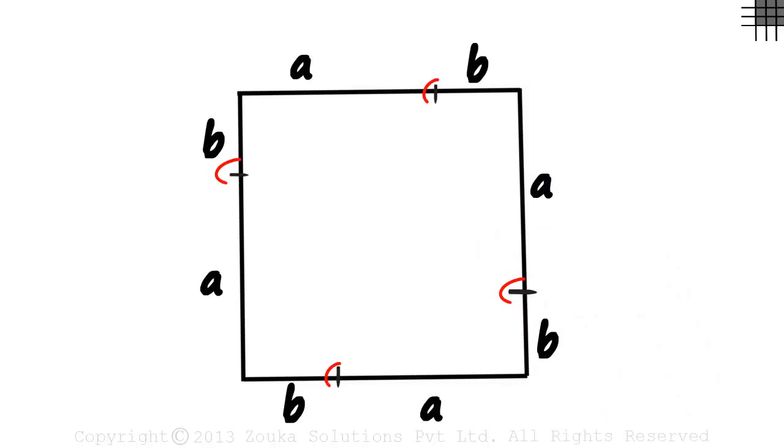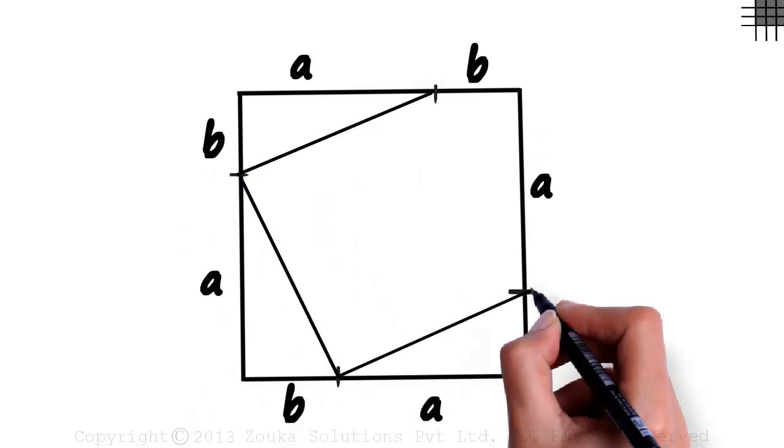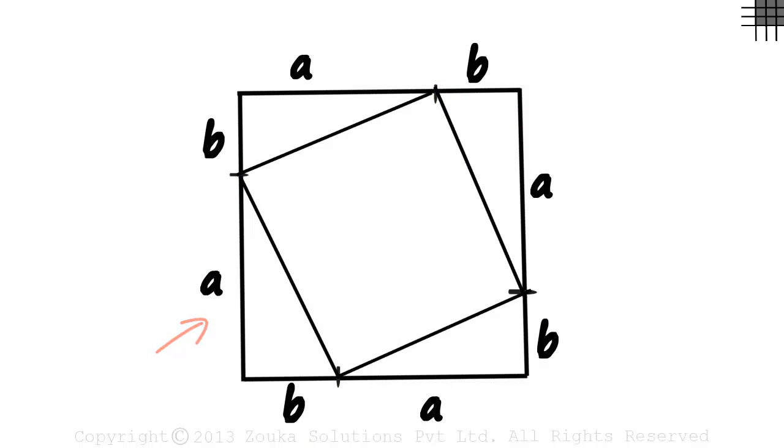We can see that we have four points, one on each side. This time we join the adjacent points. If you draw this on a piece of paper, you will notice that the figure formed inside is a square. Let the length of the sides be C centimeters.